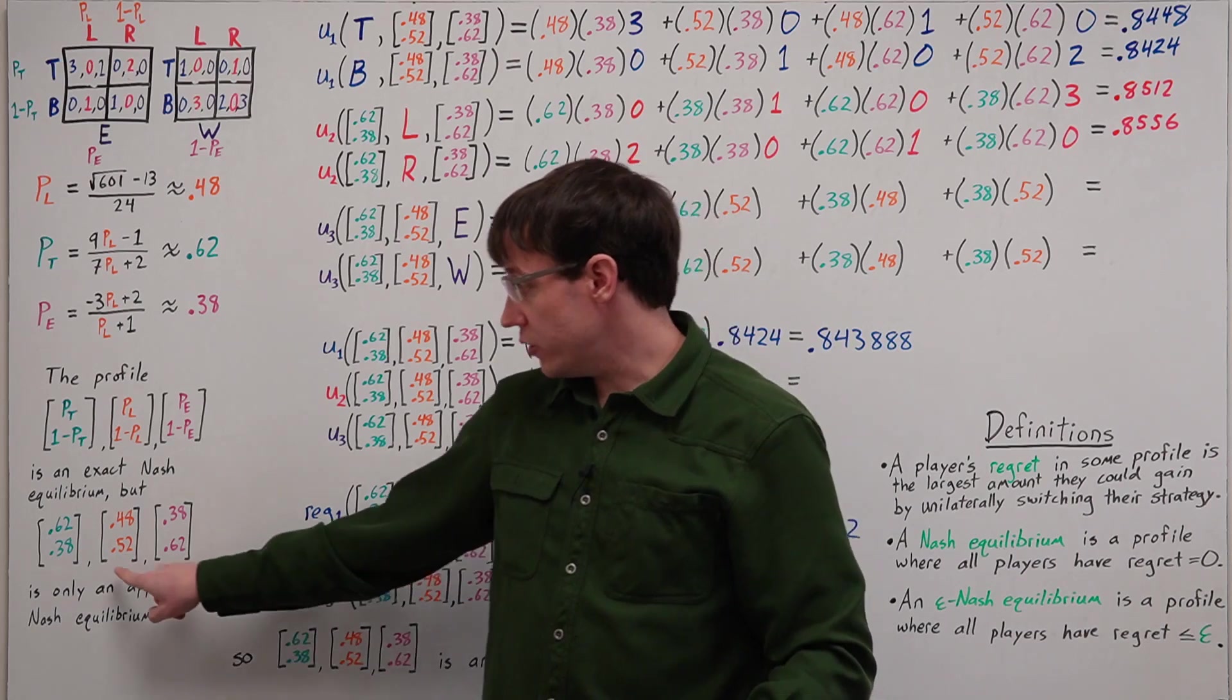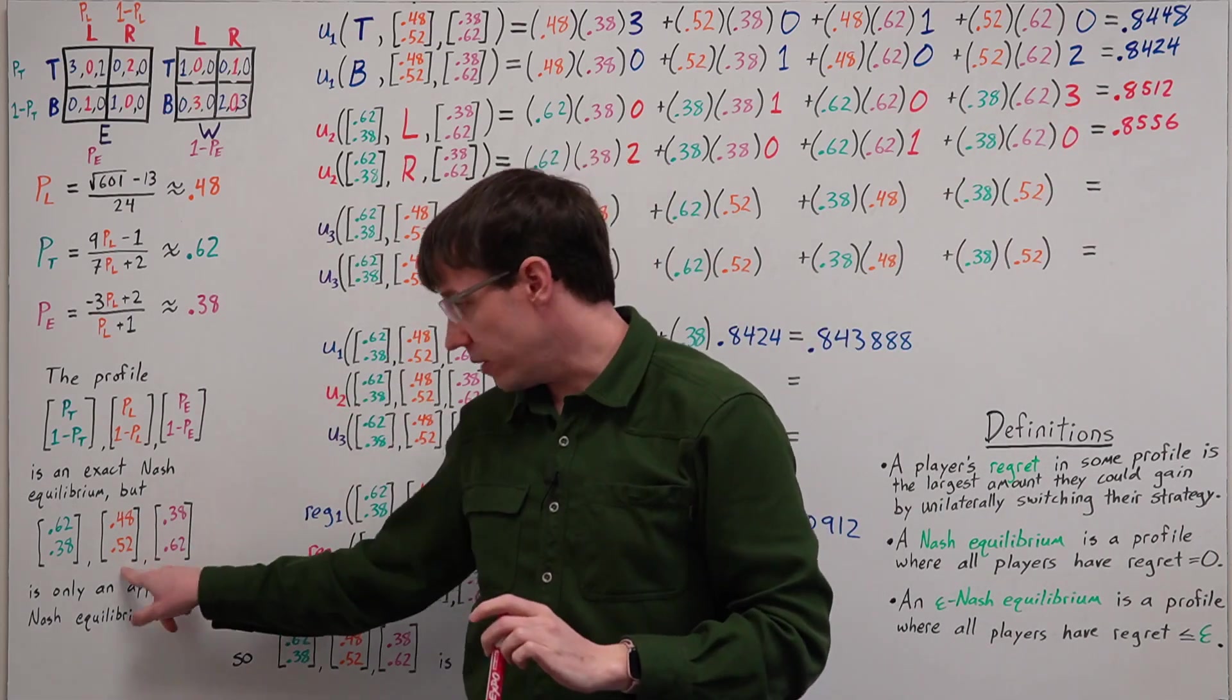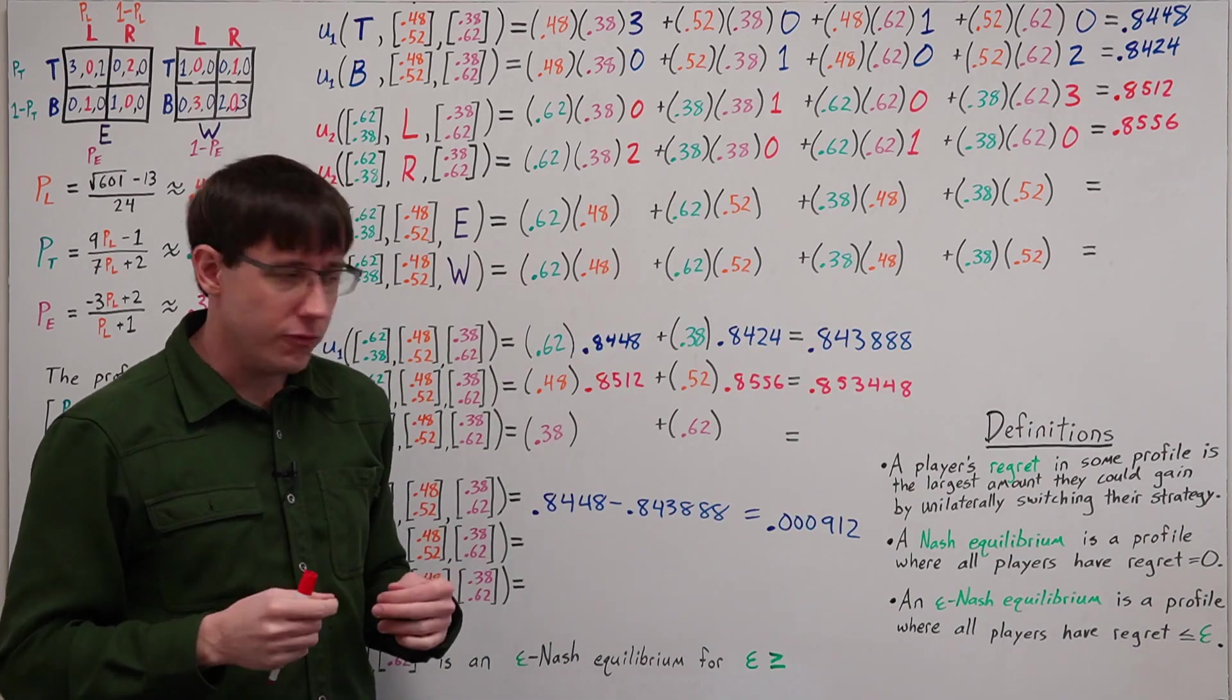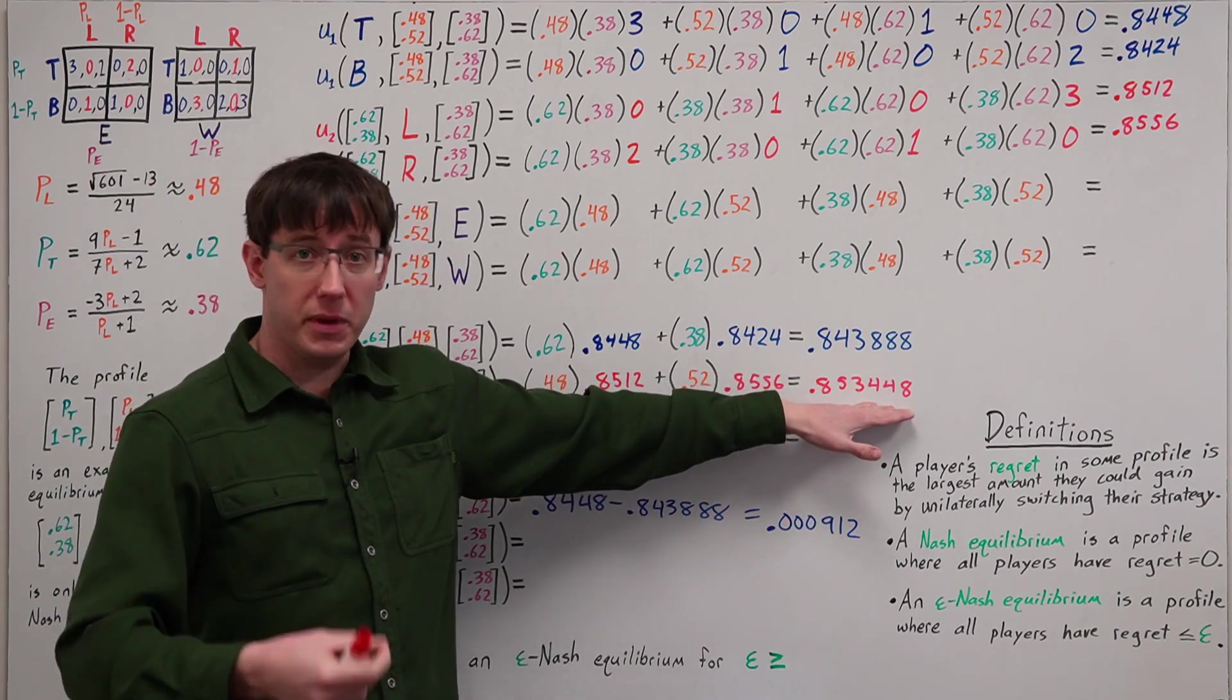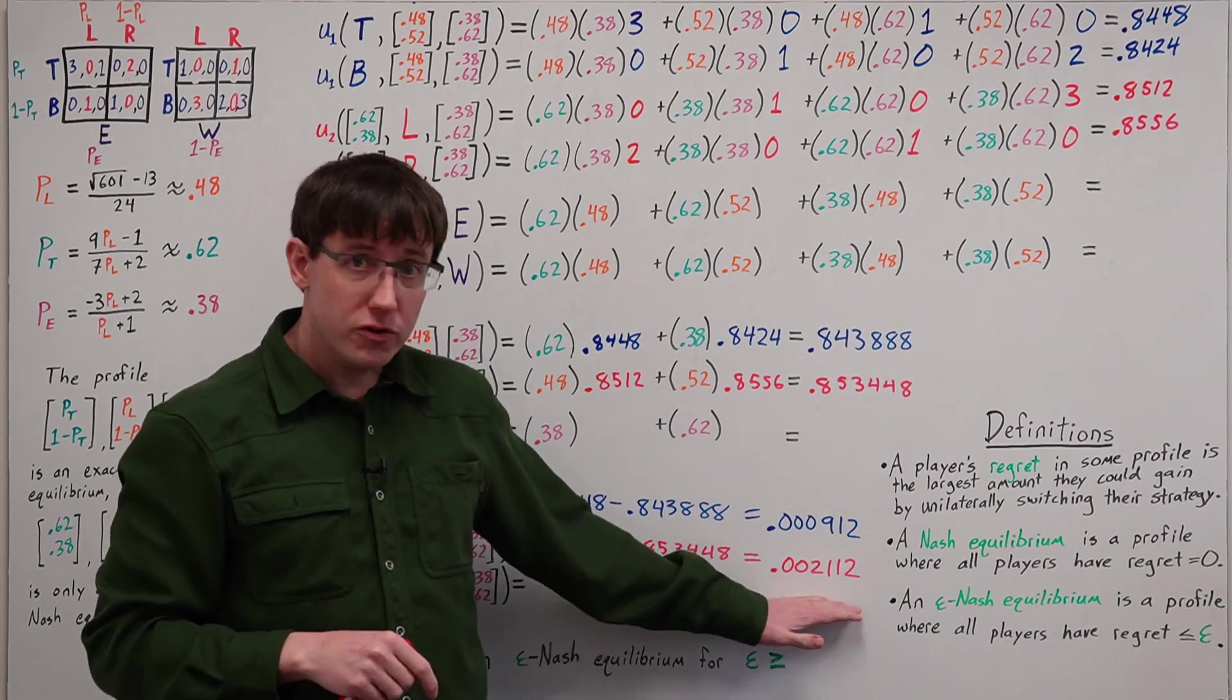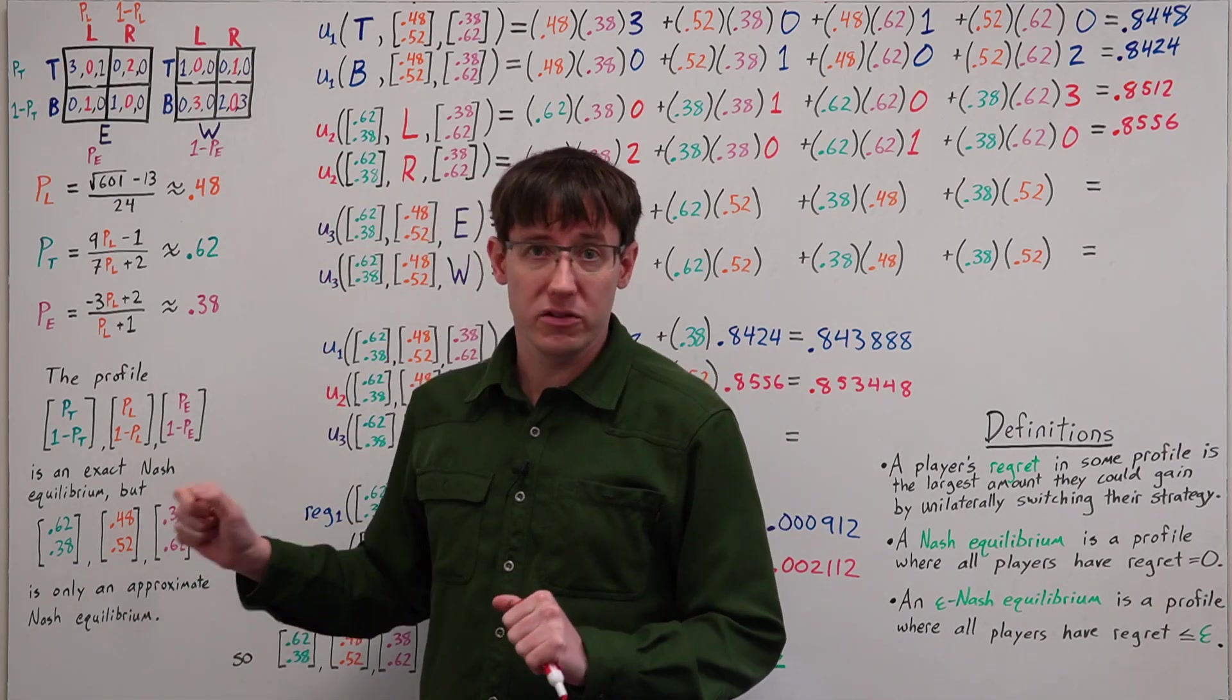Again, we can get player two's utility for following the mixture by adding up 0.48 times the expected utility of left plus 0.52 times the expected utility of right. And then we can take a difference between the better expected payoff of either action and the expected payoff of the mixture to give us player two's regret. And so player two has slightly higher regret, but overall still very little to be gained by deviating away from their mixed strategy.